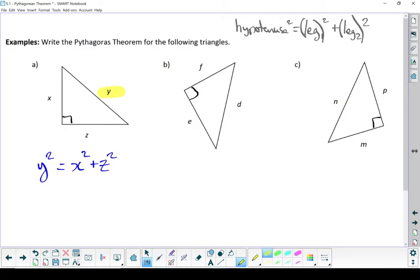Do the other two. Longest side is D - the right angle points at it. D² = F² + E². Hypotenuse squared equals leg squared plus leg squared.